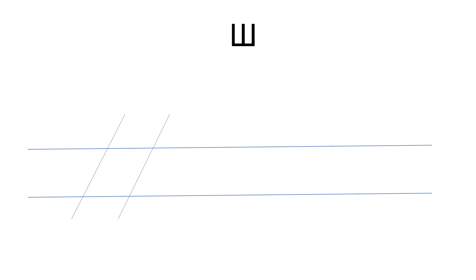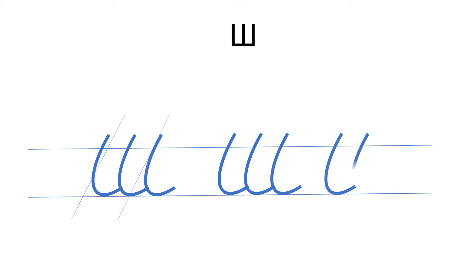Next letter is Russian Ш — 'shirt.' It's very easy to write: just three hooks. I capitalize it the same way — one, two, three hooks. Another teacher may show you a different way, but I'm happy with this. Practice a little bit: one hook, second, third. Keep the angle — the hooks are not strictly vertical, they follow the main slant angle. Practice Ш and then we'll look at a Russian name starting with this capital letter.